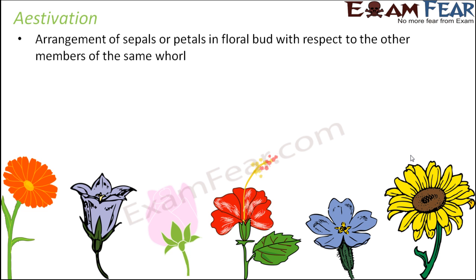What is aestivation? It is the arrangement of sepals or petals in a floral bud with respect to the other members of the same whorl. So in aestivation, we talk about how the petals are arranged.